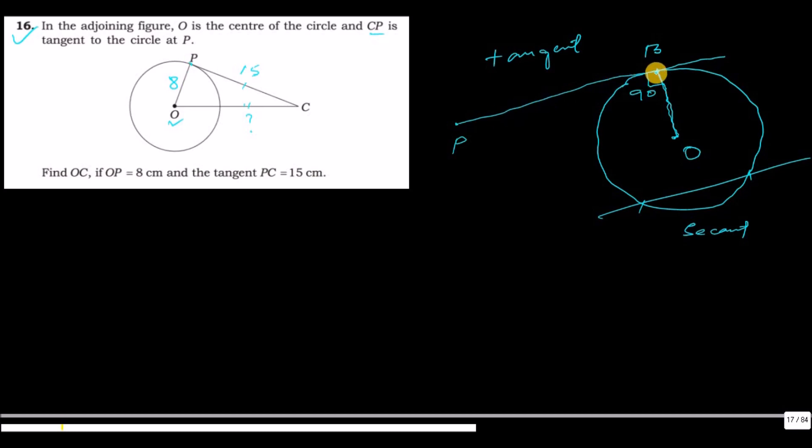This line is in the center of the circle. This is the center of the circle. This triangle is 90 degrees. It is a right angle triangle. By applying Pythagoras theorem.